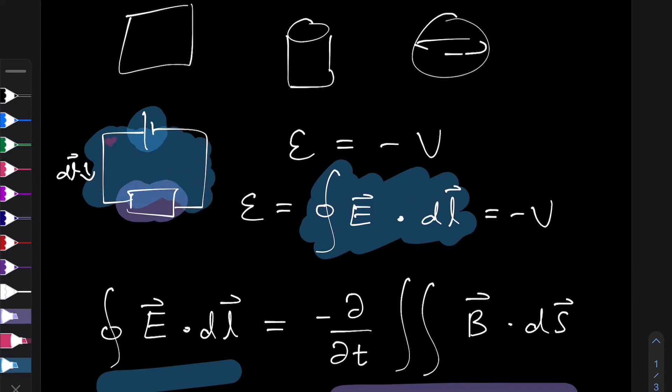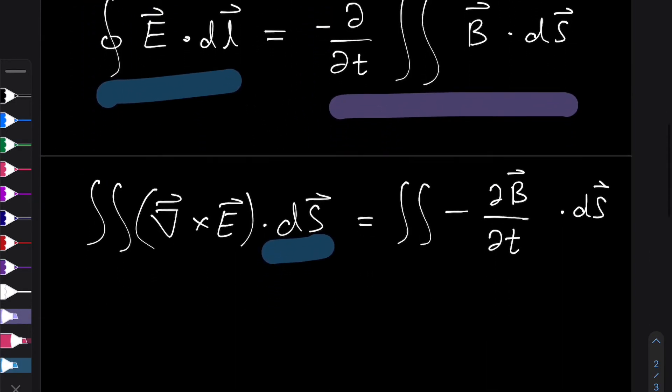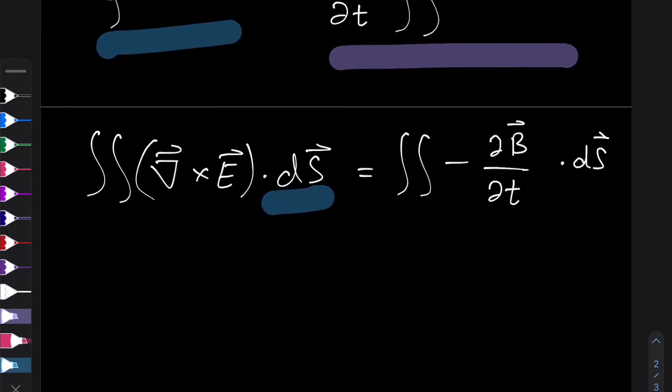So I might just use a different color for that. So this area here, the area enclosed in the circuit. So because we know they were referring to the same area, and we haven't set any other restrictions, we can equate the integrands. And from that, we get Maxwell's third equation.